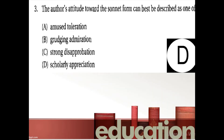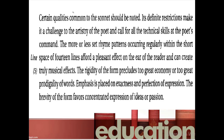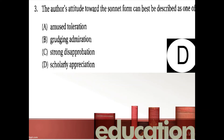The third question: the author's attitude toward the sonnet form can be described as one of — A: amused toleration, B: grudging admiration, C: strong disapprobation, D: scholarly appreciation. This question asks you to figure out how the author feels about the subject. All of the author's comments about the sonnet are positive — he approves of this poetic form — so you can immediately eliminate choice C, strong disapprobation or disapproval.